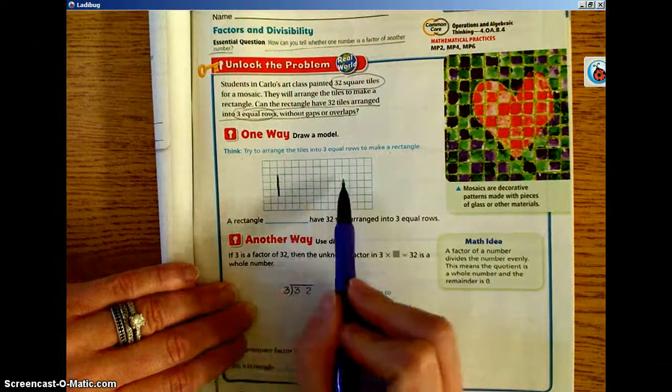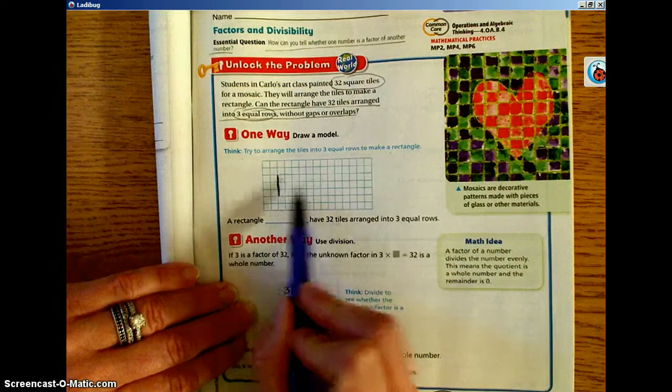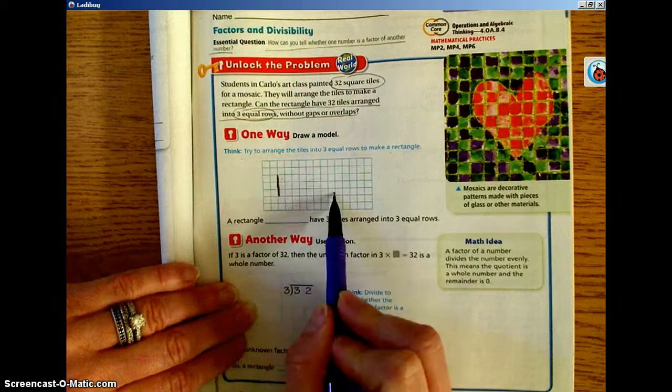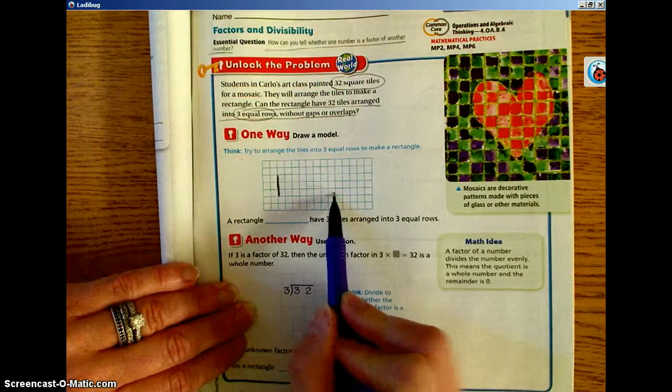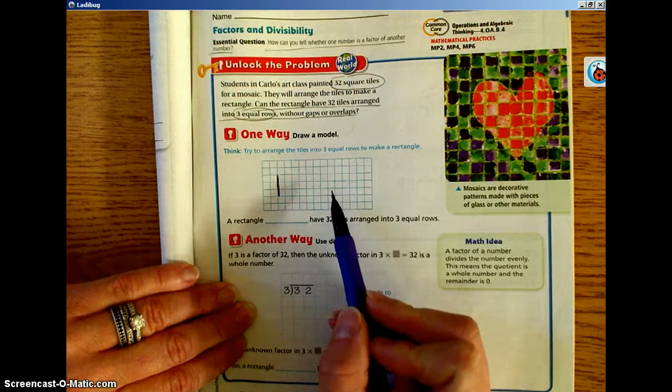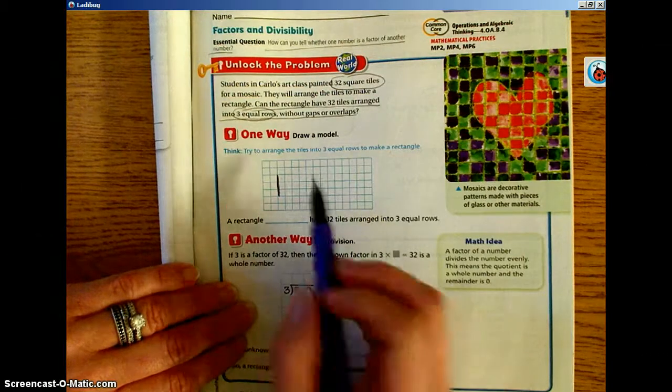We want to count out 32 tiles. I know for sure that I could do 3 equal rows of 10, but that only gets me to 30. So I have to think about what am I going to do with that additional 2 that is left over.